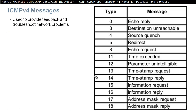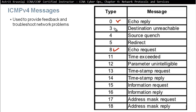ICMP messages provide feedback. For example, if you want to test from a source to a destination that there is connectivity, we send an echo request. The echo request goes from the source to the destination, and if the destination is there, it's going to reply with an echo reply. This is to make sure that reachability is confirmed.